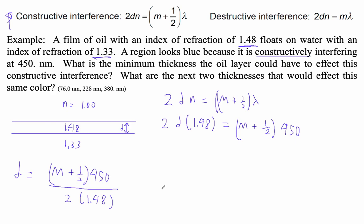Let's plug in M equals 0. I get 0.5 times 450 (this will be the minimum thickness) divided by 2 divided by 1.48.